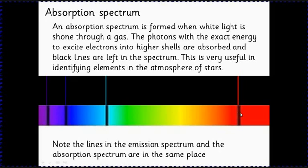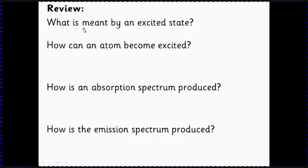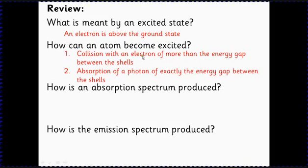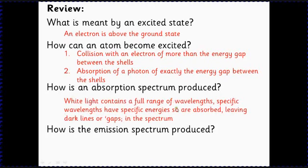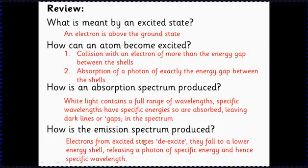Just a quick review. So what's meant by an excited state is that the electron is above the ground state, any shell above the ground state n equals 1. How can it become excited? Two ways: it collides with an electron which has got more than the energy gap between the shells, or absorbs a photon with exactly the same amount of energy as the energy gap between the shells. The absorption spectrum's produced by white light which has got a full range of wavelengths, but specific wavelengths of the specific energies which are absorbed, so that leaves dark lines or gaps in the spectrum. And the emission spectrum is formed when you've already excited the atom and they de-excite, which means they fall back to a lower energy shell and they release photons of specific energy, which means of course specific energy means a specific wavelength.